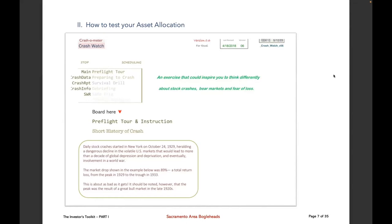What this spreadsheet enables you to do is determine if the percentage of stock you have in your portfolio is right for you. It's an exercise: you enter a few variables — how much your stocks are worth and how much your total portfolio is — and then you test it with various percentages representing market drops. Down here in a box it says 'Daily stock crashes started in New York on October 24, 1929,' as an example — that's just showing your appetite for risk.